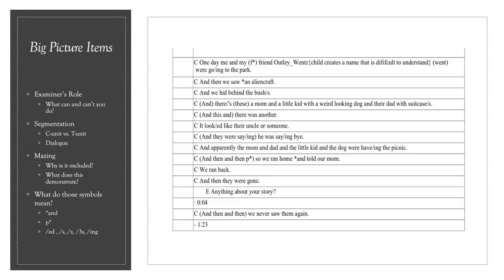Each line in a SALT transcript corresponds to what we call a T unit — what a layperson would call a sentence, with a subject and predicate. However, depending on the sample type, some are segmented by T units and others by C units. C units are used for conversational samples.